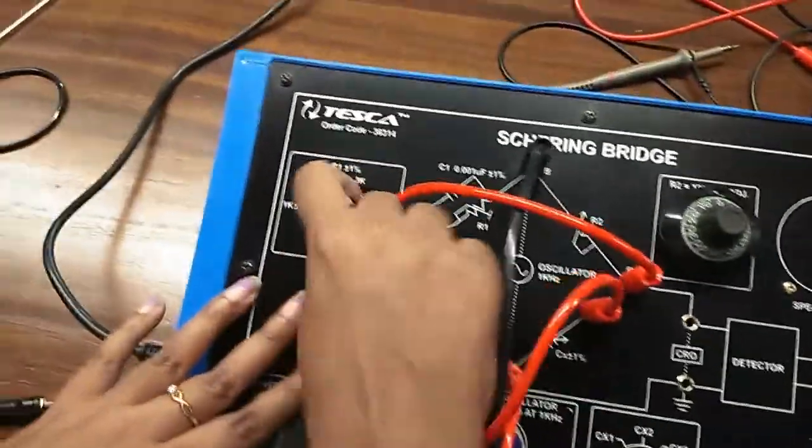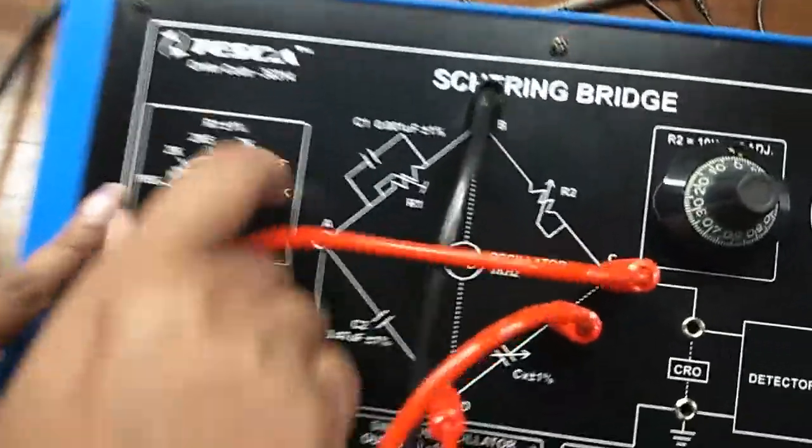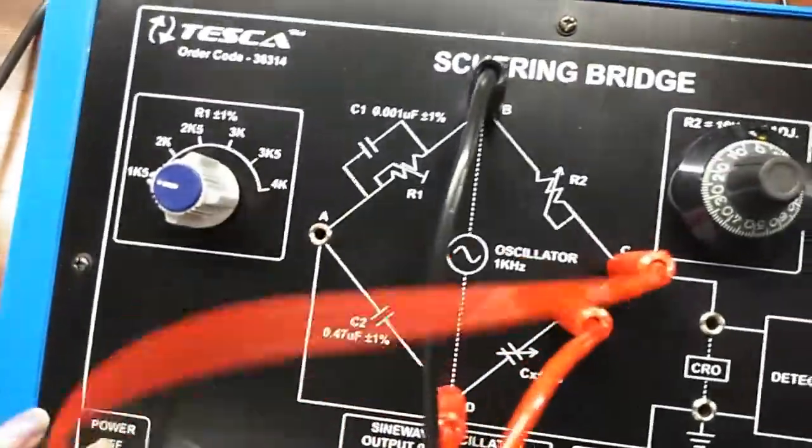Adjust the R1 at any level. I am giving 1k5. Now I am turning on the kit.